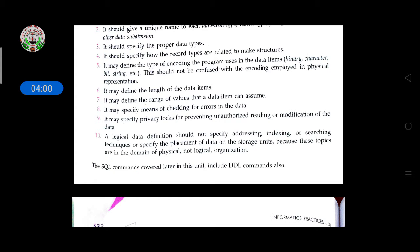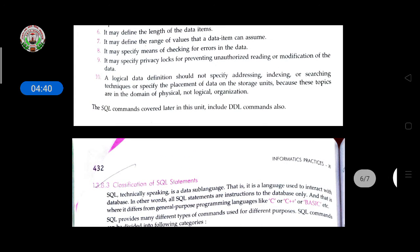It may define the range of values a data item can assume. It may specify means of checking errors in the data — for example, if a primary key column has a duplicate value or is left empty with a null value, it should give an error. It may also specify privacy controls for preventing unauthorized reading or modification of data for security purposes.